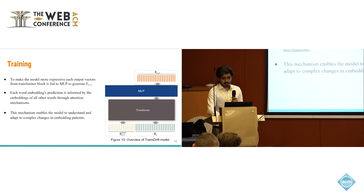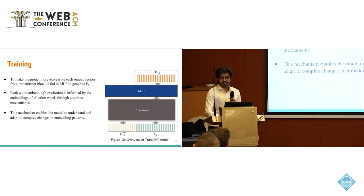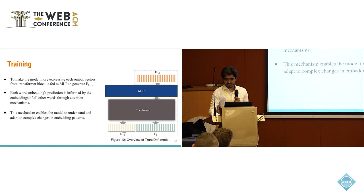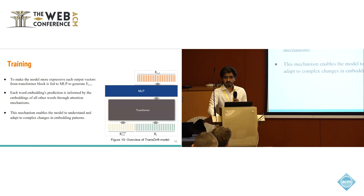We have also added a layer of MLP on top of the transformer to make the entire model more expressive. By using the transformer, the prediction of each word can attend to the embeddings of all other words via the attention mechanism. This allows our model to learn complex dynamics of embedding drift, helping the model to make better predictions.